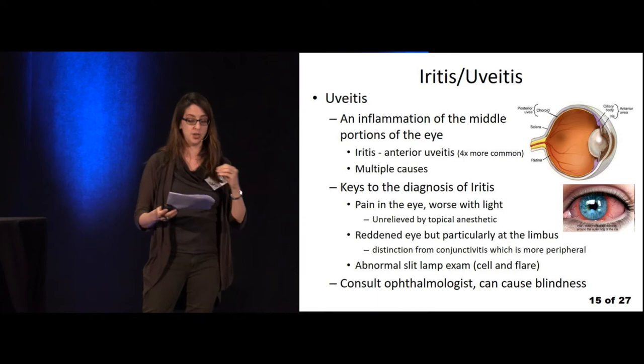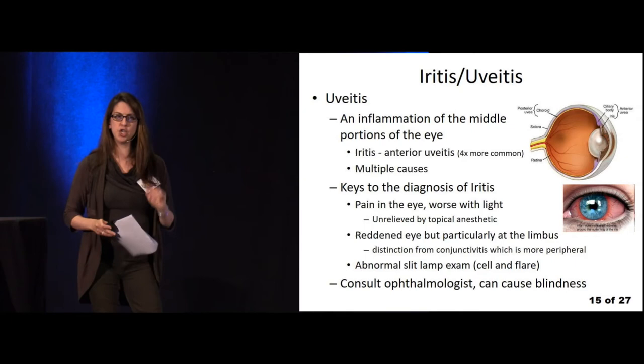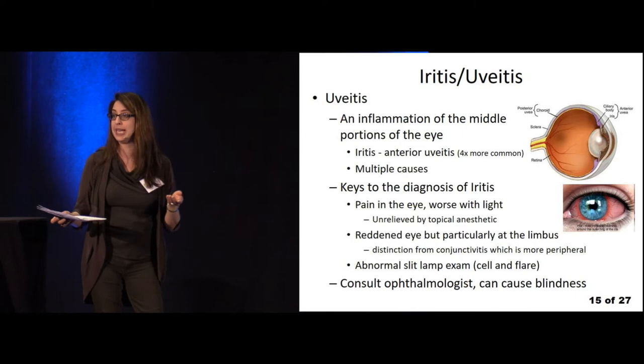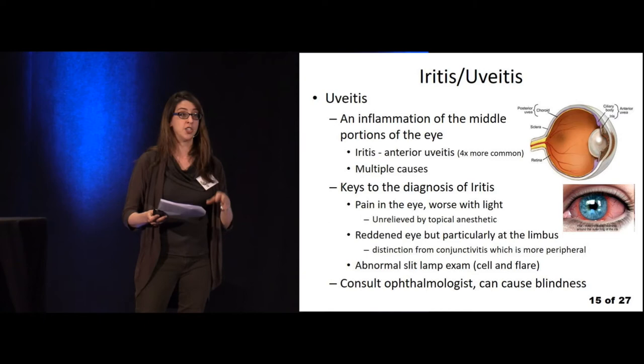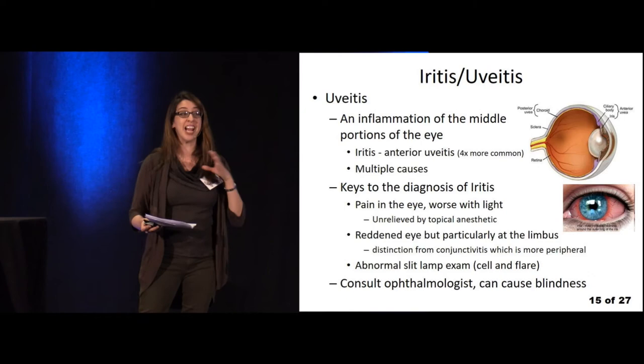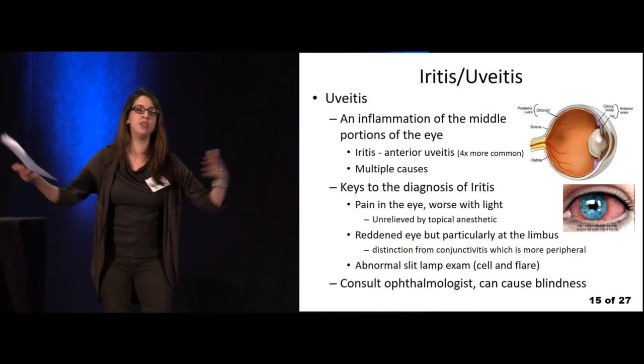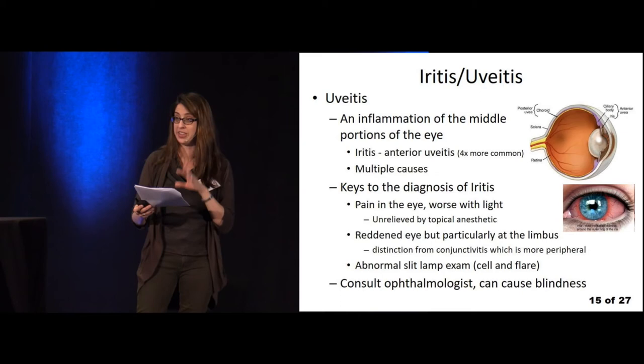Uveitis is usually caused by an underlying condition — about 40% are caused by systemic immune-mediated diseases like lupus, Kawasaki's, or sarcoid. Infections can also cause it: HSV, CMV, toxoplasmosis, tuberculosis, Zika, syphilis — many things can cause this. Make sure to instruct patients that they need further evaluation for these other entities.